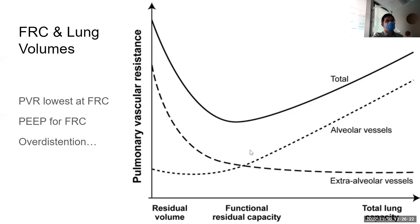To summarize: think about FRC and how large your tidal volumes are. You may need to increase them at times for the purposes of reducing RV volume overload, but you may also temporarily relieve lung-protective ventilation if you think someone is dying acutely of right heart failure.